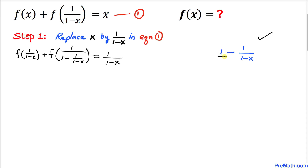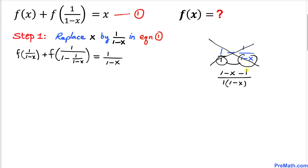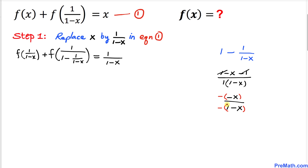Writing 1 as 1/1 and using the crisscross method to simplify, the denominator becomes (1-x-1) divided by (1·(1-x)), which gives negative x over (1-x). Multiplying top and bottom by negative 1 gives us x/(x-1).